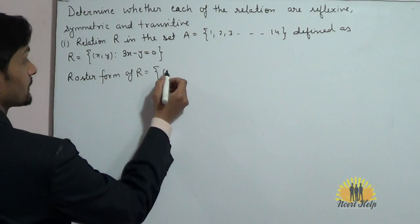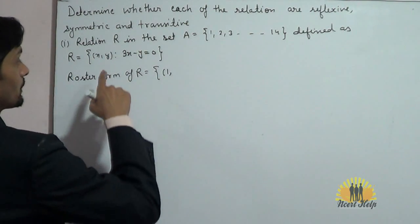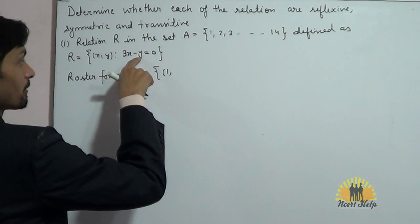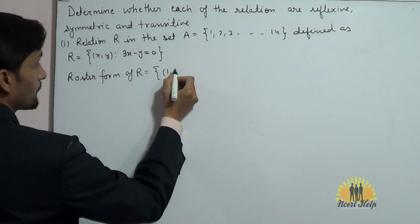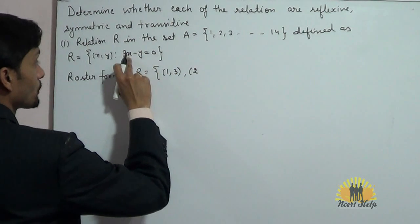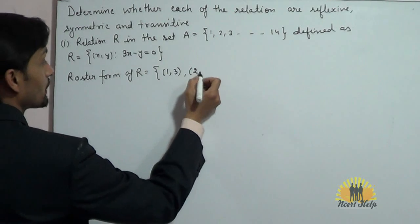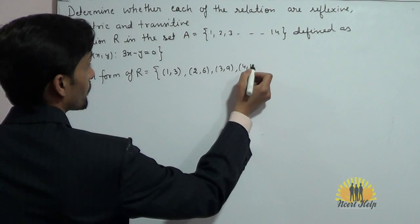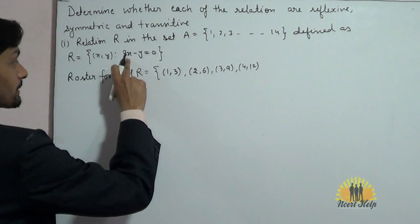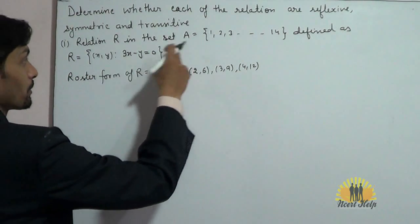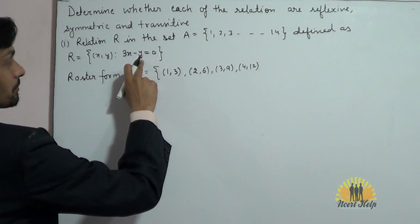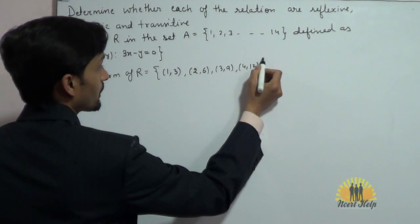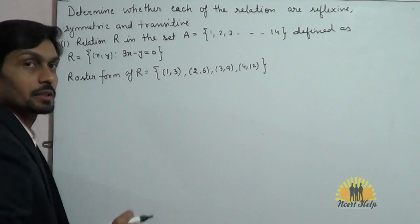If we take x equals 1, then the value of y will be 3. If we put x equals 2, then the value of y will be 6. Similarly, 3, 9 and 4, 12. If we put x equals 5, as 5 belongs to set A, y will become 15. But 15 does not belong to A, so (5, 15) will not be a pair of the relation.